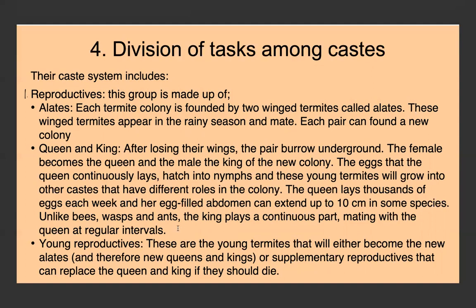The queen lays thousands of eggs each week, and her egg-filled abdomen can extend up to 10 centimeters in some species. Unlike bees, wasps, and ants, the king plays a continuous role by mating with the queen at regular intervals. Within the reproductives, there are also young reproductives — young termites that will either become new alates to found new colonies, or supplementary reproductives to replace the king and queen if they die.